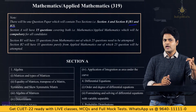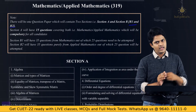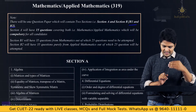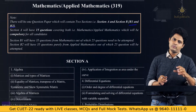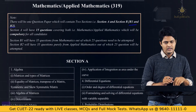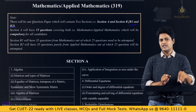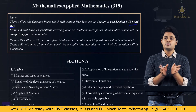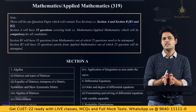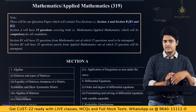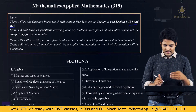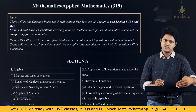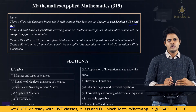Section A will have 15 questions covering both maths and applied maths, which is compulsory for all candidates. Section B is split into either B1 or B2 — not both. B1 will have 35 questions in maths, of which 25 need to be attempted, making a total of 40 questions to attempt.